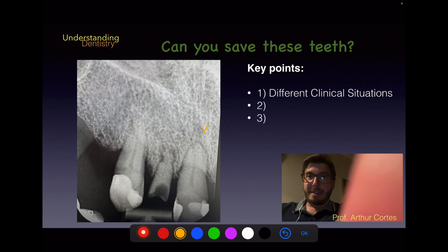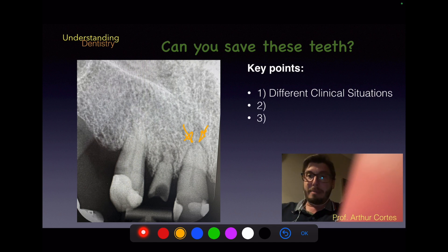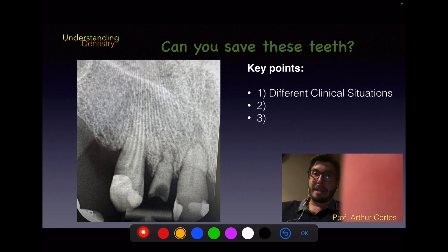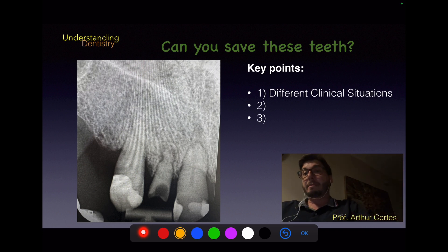We'll comment on the periapical region shortly. I hope you notice that there is periodontal ligament space widening, probably related to these restorations. The pulp chamber is also atrophic. We need to understand the treatment plan implications of these findings.